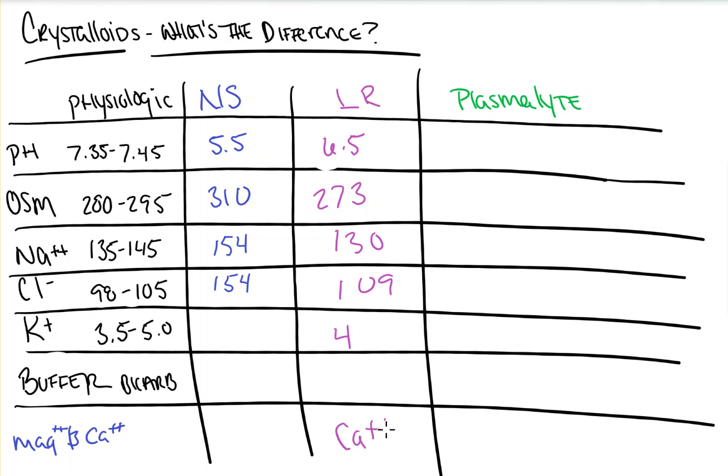Now, LR also has calcium, and that's to help maintain solution neutrality with blood. This brings up another issue in that LR should not be given in the same line as blood transfusions. Blood products oftentimes contain citrate as a preservative, which can bind and chelate the calcium and lead to hypocalcemia in the patient you're resuscitating.